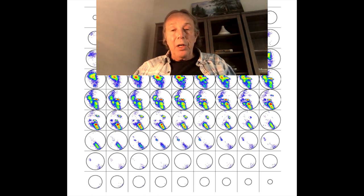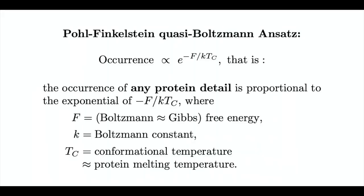I shall next briefly explain how we can employ this distribution of BHB rotations using a basic tool of protein theory called the Pohl-Finkelstein-Quasi-Boltzmann-Ansatz. Occurrence of any protein detail is proportional to the exponential of the negative free energy F divided by KTC, where K is the usual Boltzmann constant and TC is the conformational temperature. The upshot for us is that we can use the distribution of rotations of BHBs from HQ60 to predict free energies, where the sparse regions of the distribution correspond to large free energy.